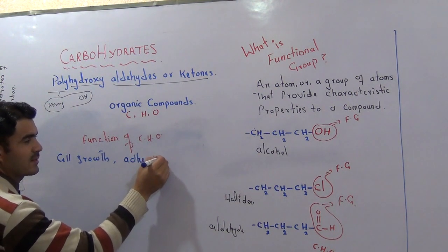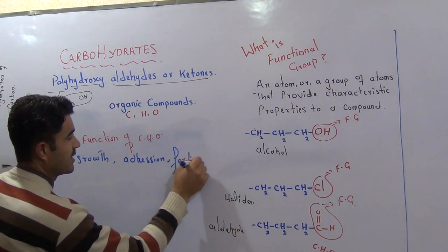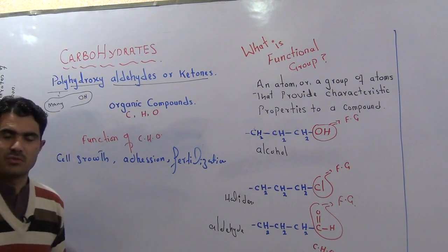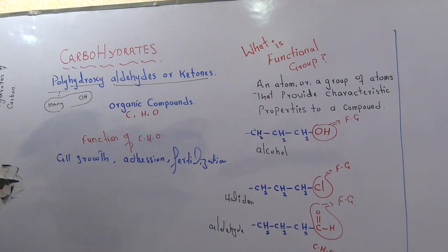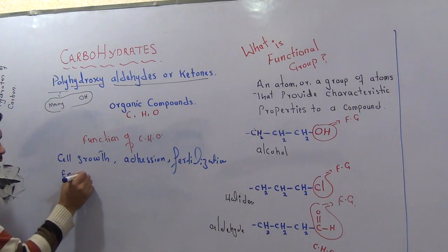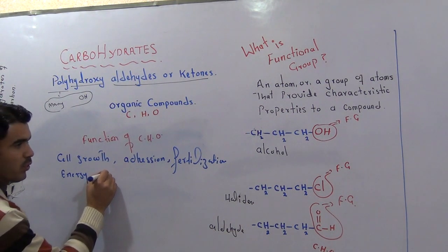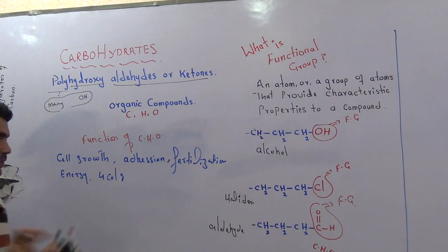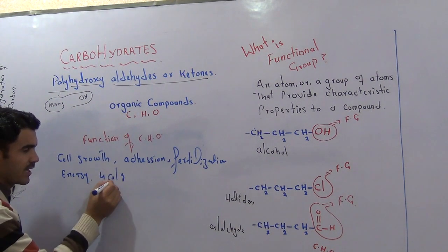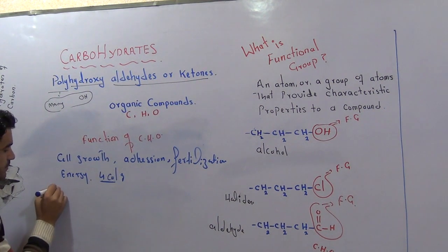Cell attachment — one cell attaching to another cell — is also because of carbohydrate. Even fertilization, the fusion of egg and sperm, is also possible with the help of carbohydrate. Another function is energy: our body needs a continuous supply of energy and that energy comes from carbohydrate. One gram of carbohydrate gives four calories of energy.